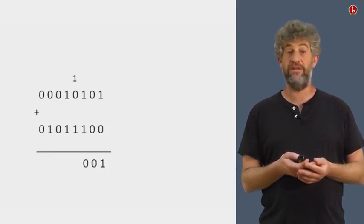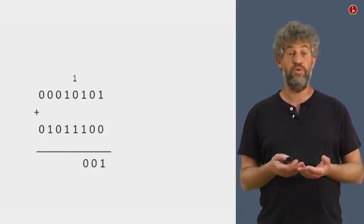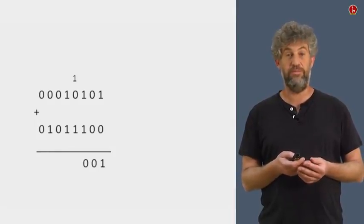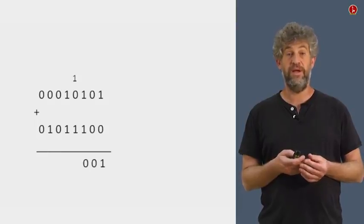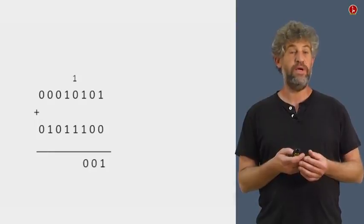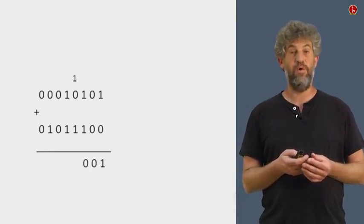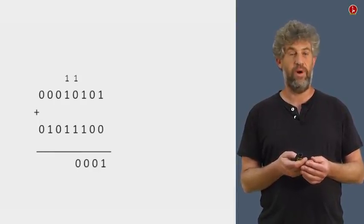Now, the first time we get into a problem is we have one plus one, because one plus one is two. Two is more than what we can write in a single digit, bit, boolean bit. So we need to actually do the same kind of trick, write down zero and carry the one to the next position. And now we can continue. We need to add one plus zero plus one. That's again more than what we can write in a single bit because that's two. So we write zero, we carry one.